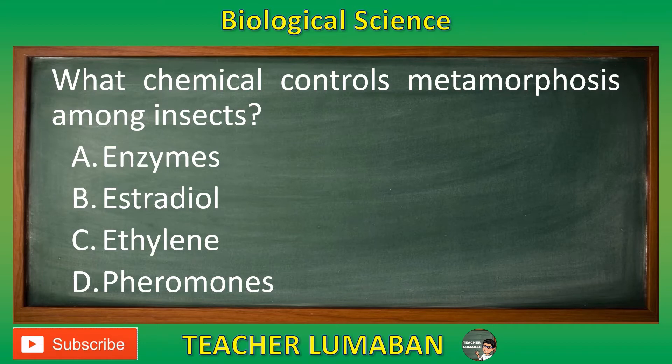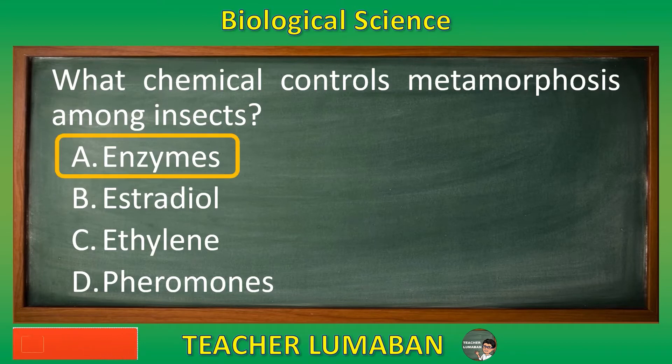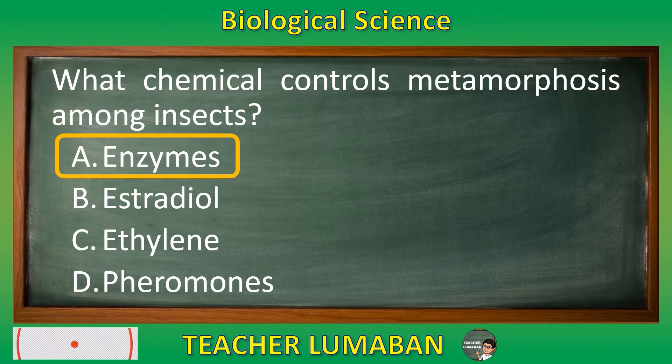The correct answer is Letter A: Enzymes. Enzymes are the chemical that controls metamorphosis among insects.